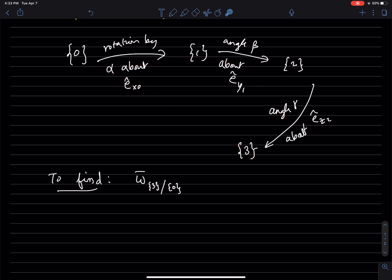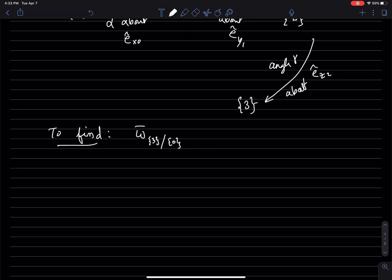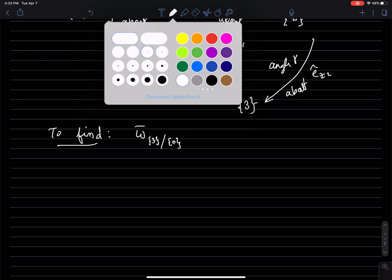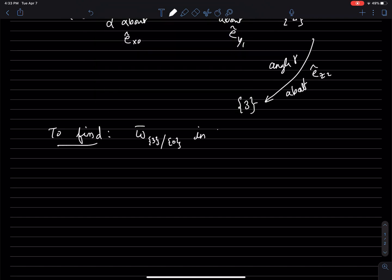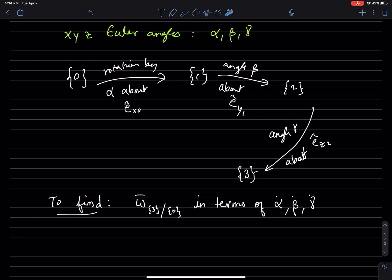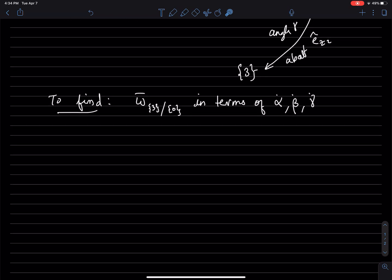And you want to find the angular velocity of 3 with respect to 0 in terms of these Euler angles, alpha, beta, gamma, or more specifically in terms of alpha dot, beta dot, gamma dot. Angular velocity has to do with the rate of change of orientation. And we want to find this in terms of these and then potentially these coordinate frames.